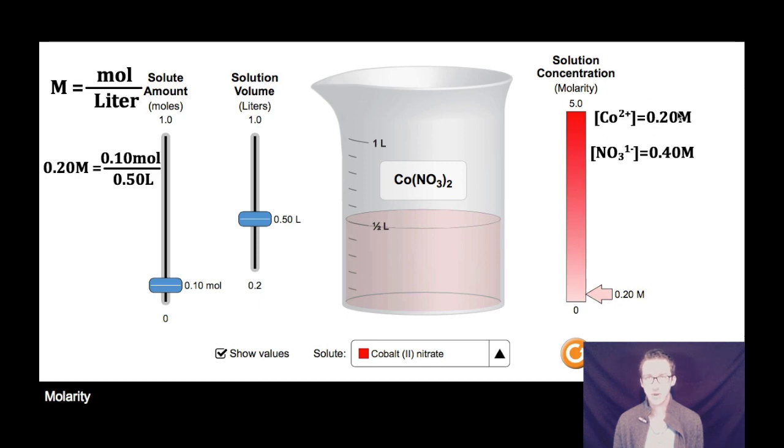Because the ratio of ions is one to two, the concentration of the cobalt ions is 0.2 molar, while the concentration of the nitrate ions is 0.4 molar.